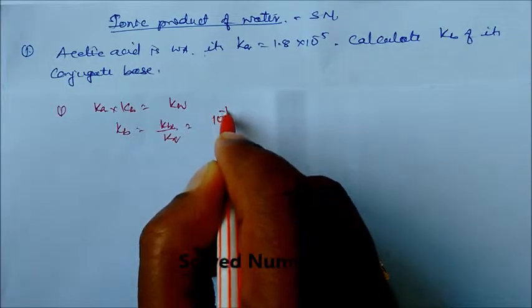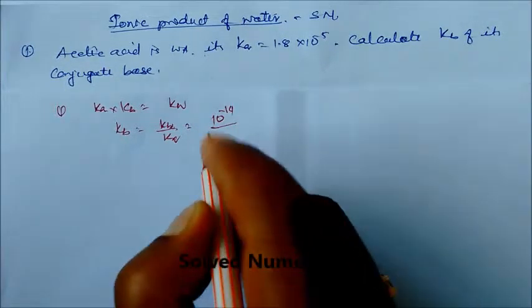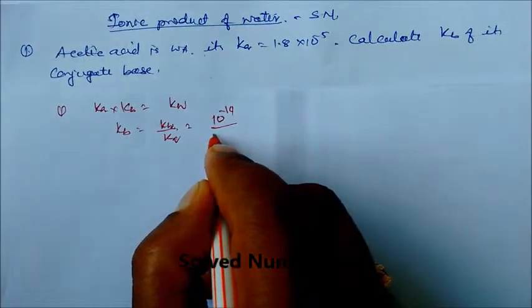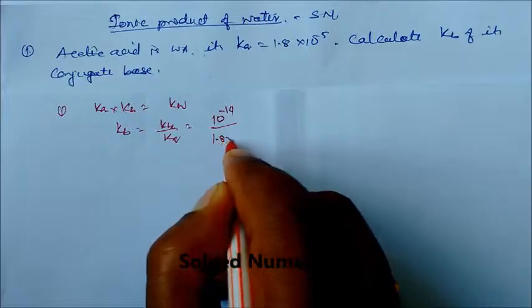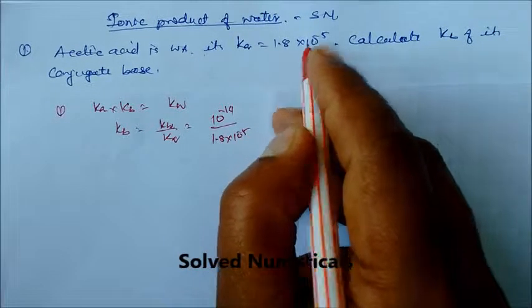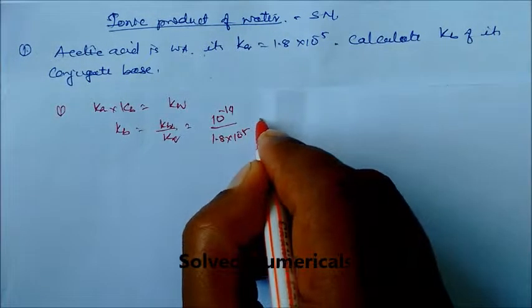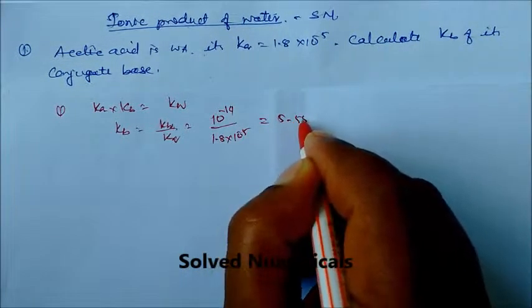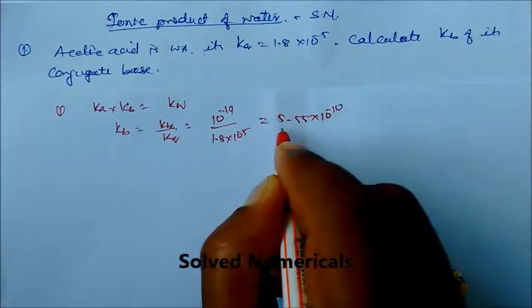We know that Kw is 10⁻¹⁴, and Ka is 1.8 × 10⁻⁵. On solving, you will get 5.55 × 10⁻¹⁰.